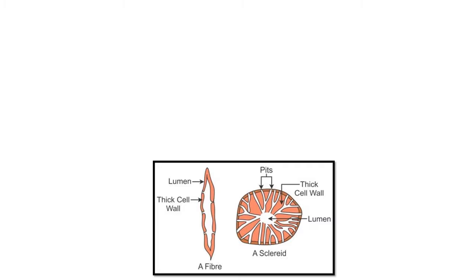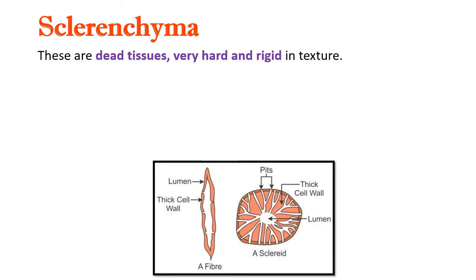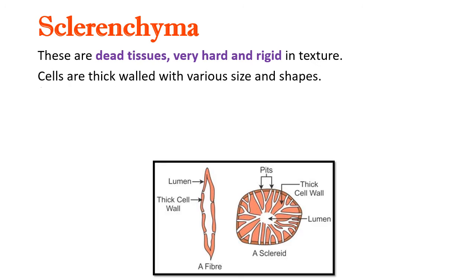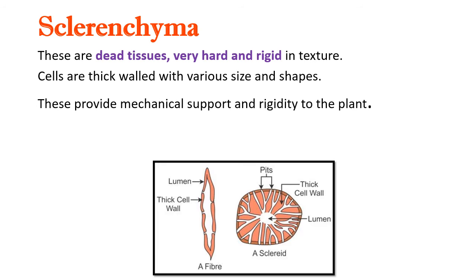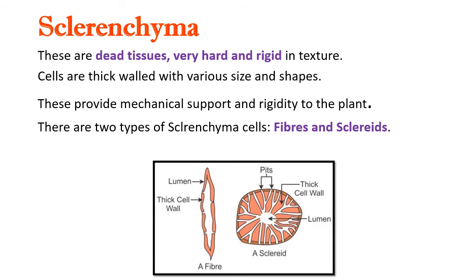The cells of parenchyma and colenchyma are living. But in sclerenchyma, tissues are dead — they are very hard and rigid in texture. Cells are thick-walled with various sizes and shapes. Sclerenchyma provides mechanical support and rigidity to the plant. There are two types of sclerenchyma cells: fibers and sclerides. You can see the diagram of these two kinds in the given picture. Fiber is thin and elongated with the presence of a lumen. Sclerid is round in structure and also has a lumen. Cell walls are thick and pits are also present.